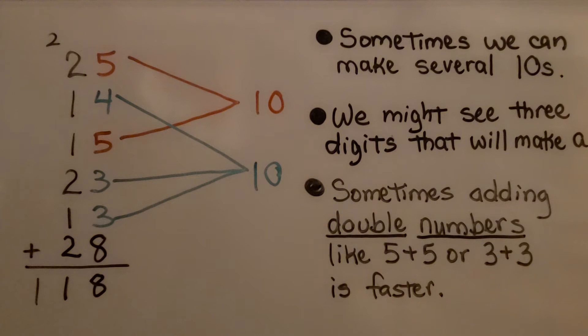So sometimes we can make several tens. We might see three digits that will make a 10. Sometimes adding double numbers, doubles, like 5 plus 5 or 3 plus 3 is faster.